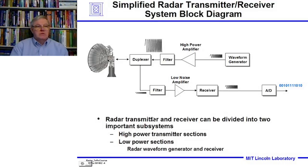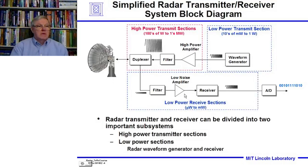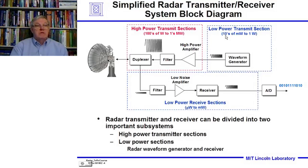Radar transmitters and receivers can be divided into two important subsections: the high power transmitter section and the low power section. The low power section is, of course, the receiver, because the echoes coming back are very weak. The waveform generator signals are very small to begin with.